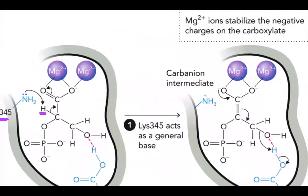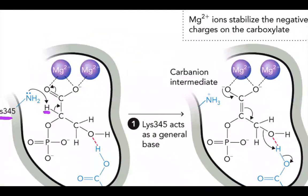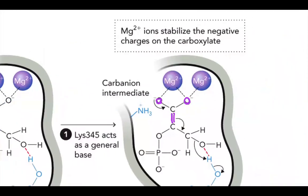When you remove this hydrogen, you lose the double bond on this carbon-oxygen. The double bond then goes in between the two carbons, and now you have two oxygen atoms that are negatively charged — so you have a lot of negatively charged species. It's really important that you have these two magnesium ions to stabilize those negative charges — we call that the carboxylate. This is a stabilization of our anion intermediate.